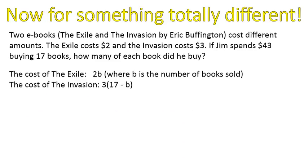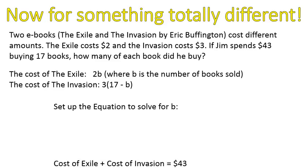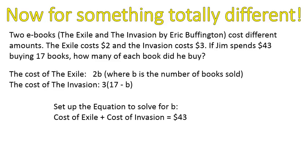The cost of The Exile is 2 times b, where b is the number of Exile books bought. The cost of The Invasion is 3 times (17 minus b), since 17 minus b gives the number of Invasion copies. Combining both equations: the cost of The Exile plus the cost of The Invasion equals forty-three dollars, giving us: 2b + 3(17 − b) = 43.